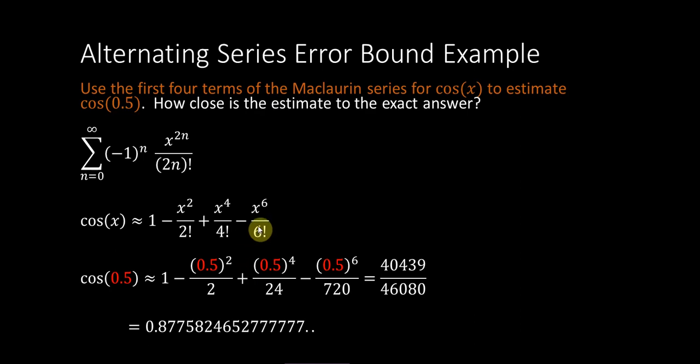And notice I said four terms, not fourth degree. This is four terms of the Maclaurin series for cosine. Plug in this value, I get this estimate. And again, the question that we're addressing here is really the second one, how close is this estimate to the exact answer?